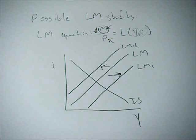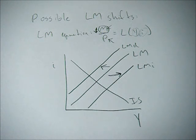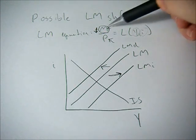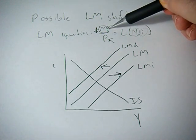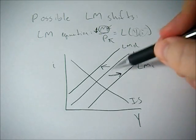So if you have access to credit cards, you can actually spend money that you don't have. So the real amount of money or the virtual amount of money or the money available in the economy has gone up even though the physical amount of money hasn't changed.